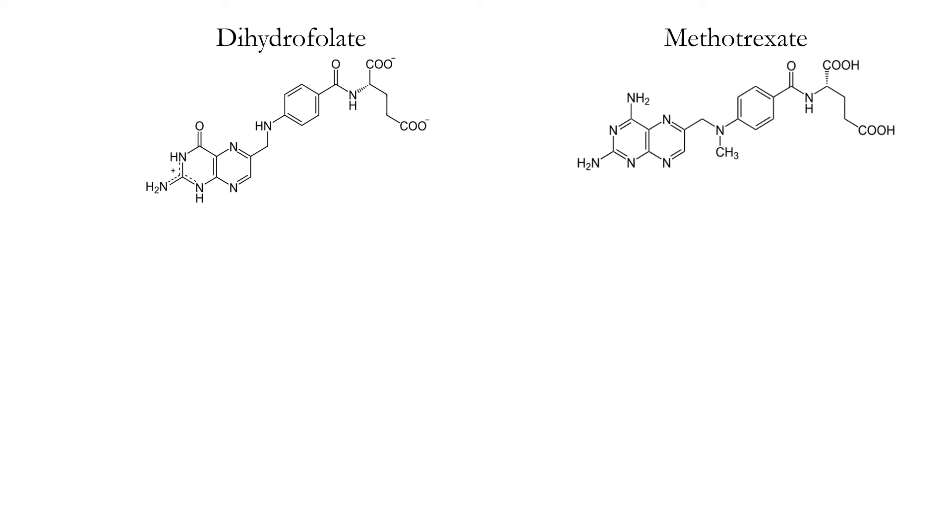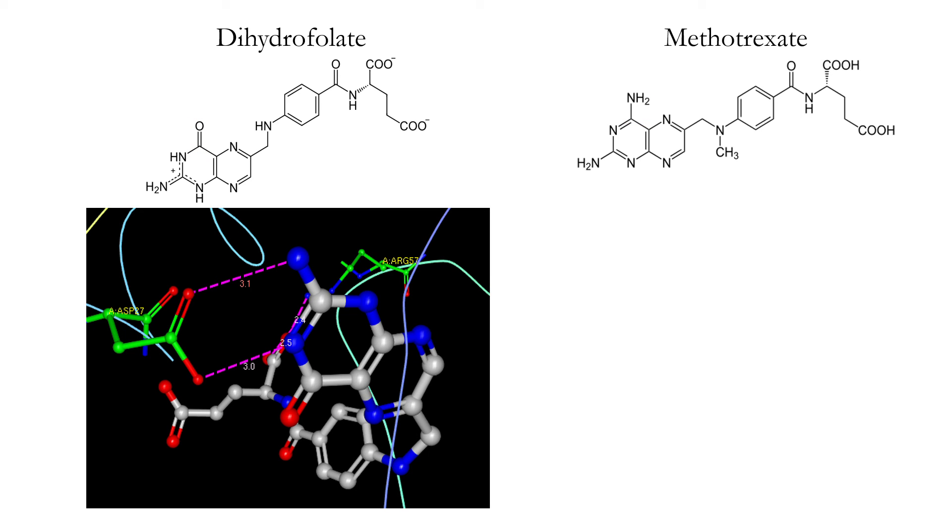The reason methotrexate has a greater binding affinity than dihydrofolate is actually pretty interesting. As you can see, the two molecules have fairly similar molecular structures. However, there's one difference in particular that accounts for their different binding affinities. It's this: where dihydrofolate has a double bonded oxygen on its fused rings, methotrexate has an amine group.